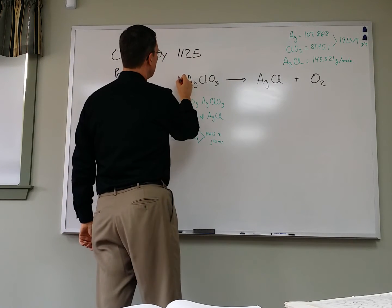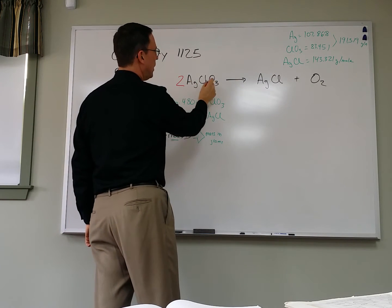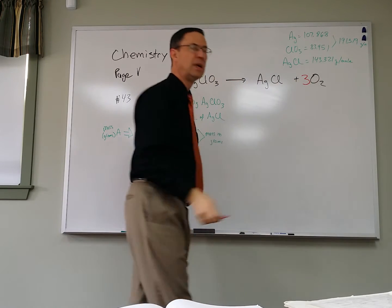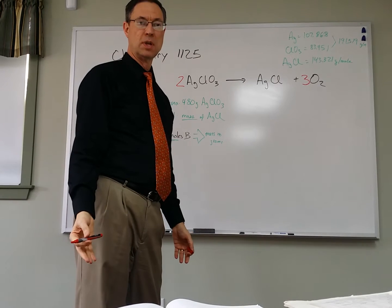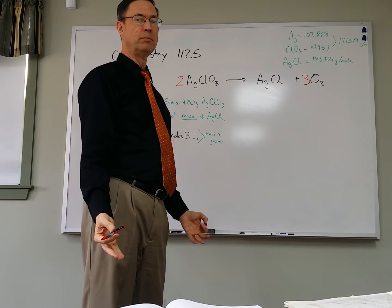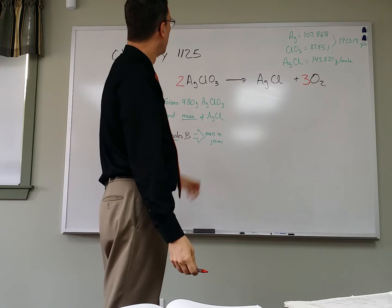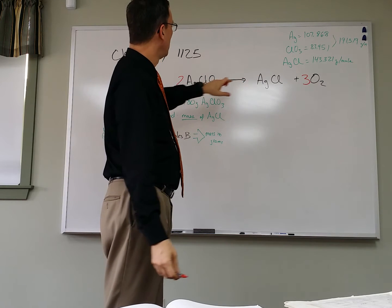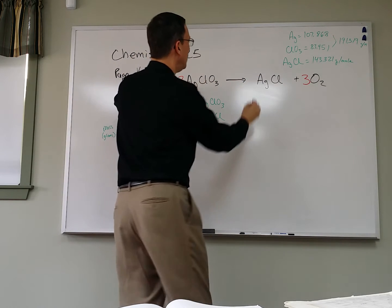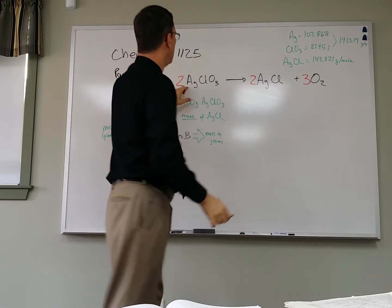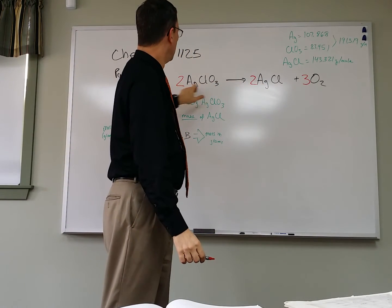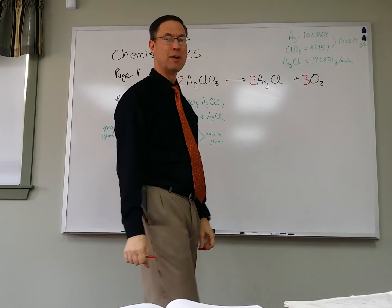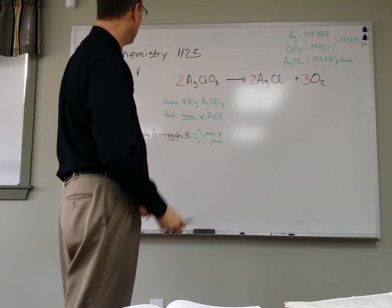So if I change this to be a 2 out here, now I have 6 oxygen, and then I change that to be a 3, and now I have 6 oxygen. So I solved one problem, but of course I created a couple more. But let's see if we can quickly fix that. We have 6 oxygen, I can go back, I have 2 silver. If I change that to 2, ah, 2 silver, 2 silver, 2 chlorine, and 2 chlorine, so we're good. We have the equation balanced now at this point.